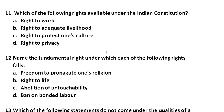Question number 12: Name the fundamental rights under which each of the following rights falls. You have to identify the main fundamental right category. For example: the freedom to propagate one's religion — which fundamental right does it fall under? Right to life — which is the fundamental right? Abolition of untouchability — who is it under? The ban on bonded labour — which fundamental right covers it?